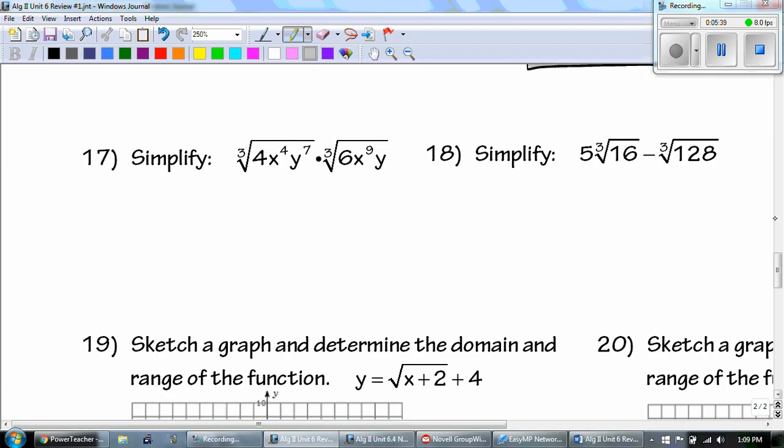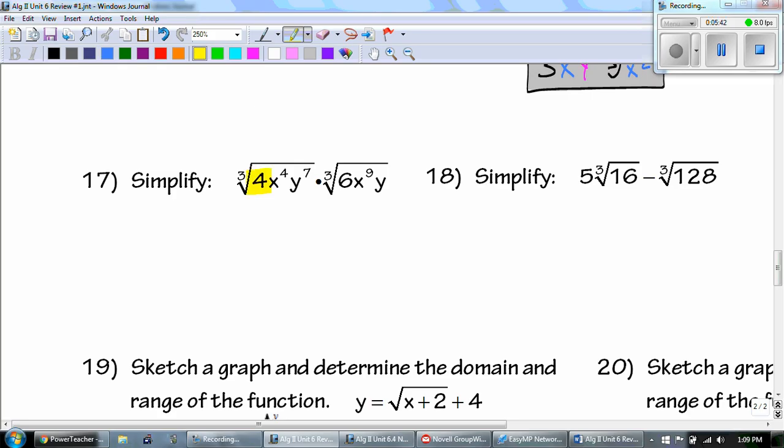Number 17. We multiply, because these are the same, these are both cubed. So, I have the cubed root, 4 times 6 is 24, x and y, 4 plus 9 is 13, 7 plus 1 is 8. I want to break down each part of these. So, I got 1, 2, 3.